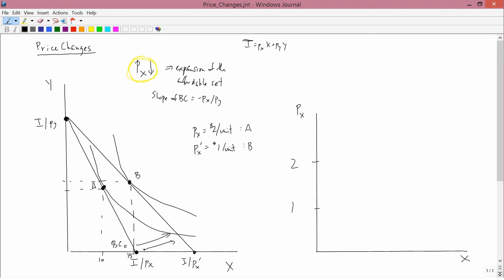So, I want to graph point A in my right-hand graph. My right-hand graph is going to be $2 a unit, so I'll have 2 on the vertical axis. And then the amount of X that I consume is the X coordinate of point A. The X coordinate of point A is 10. So that's the point I have.